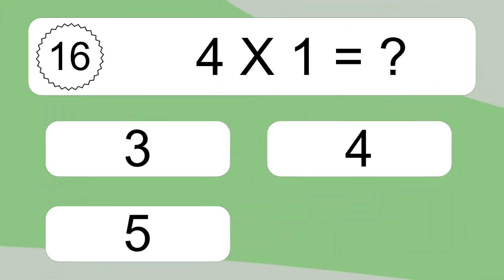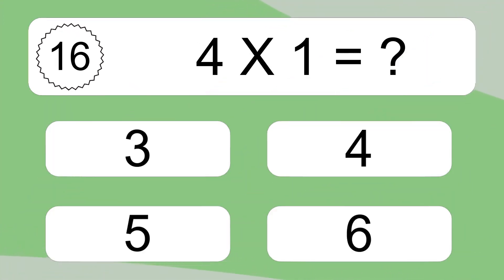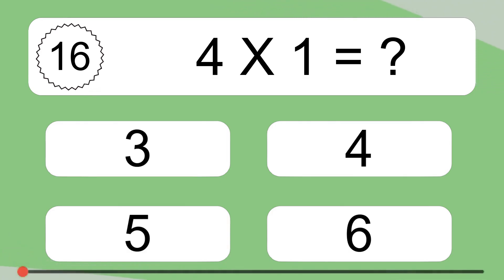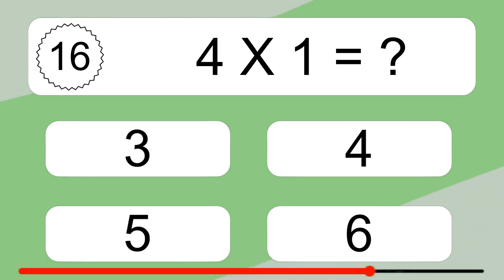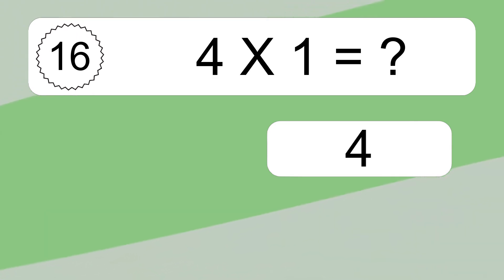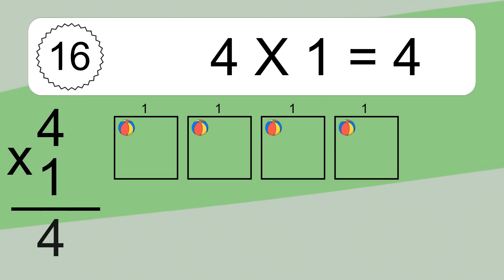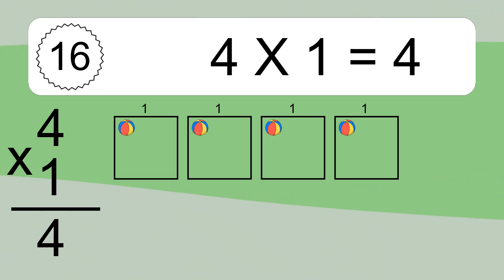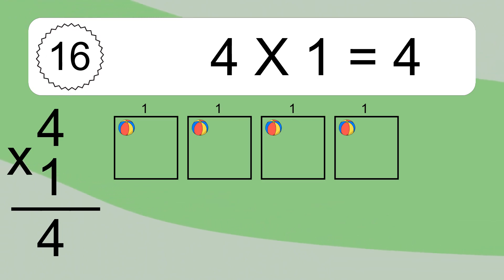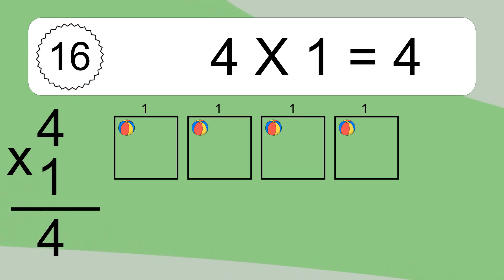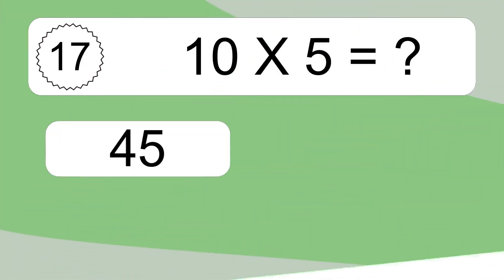4 times 1 equals what? 4 times 1 equals 4. We have 4 boxes, and each box has 1 colorful ball inside. If you count all the balls in all the boxes together, you will have 4 times 1 balls. This equals 4 balls.